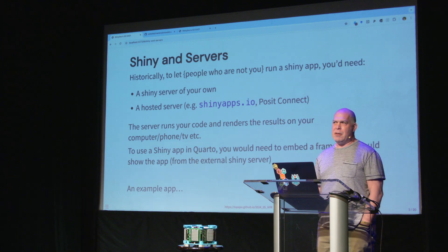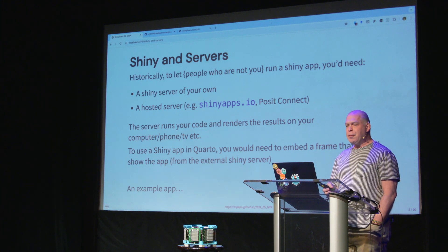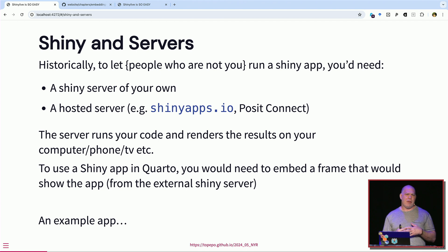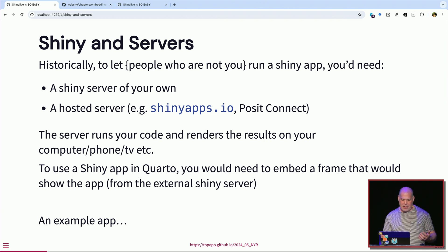I'm pretty sure everybody here has heard of Shiny. Historically, if you want to deploy a Shiny app — have somebody interact with it who's not on your computer — you basically had to use a server. You could get your own Shiny license, build your own server, or use one of the hosted services like shinyapps.io and Posit Connect. The software sits on the server; your device is just a terminal sending messages back and forth.